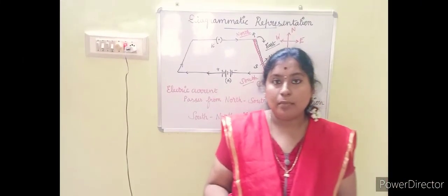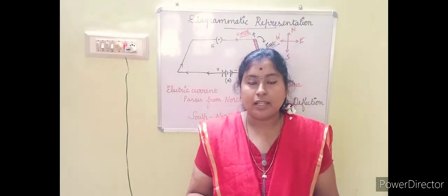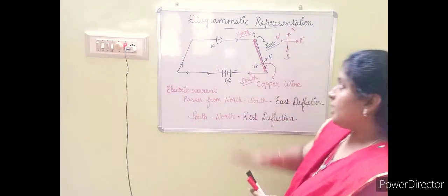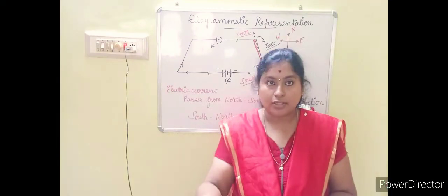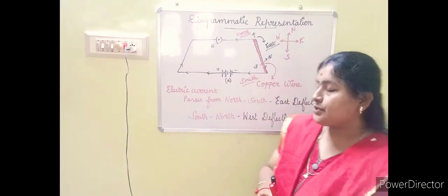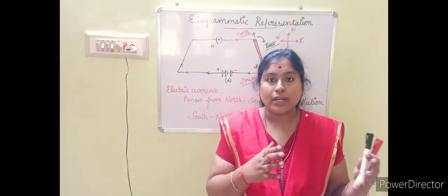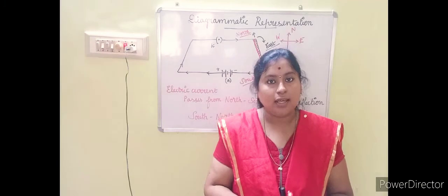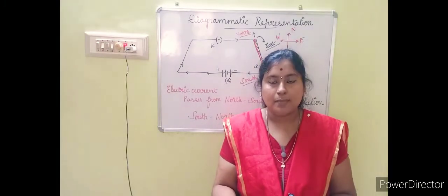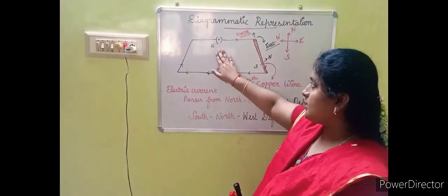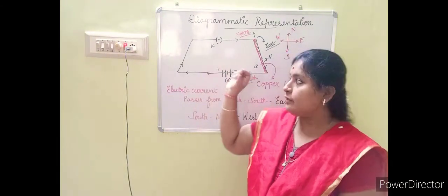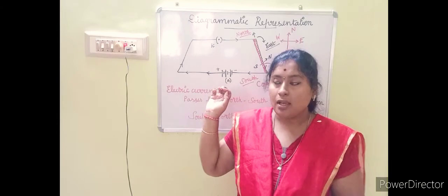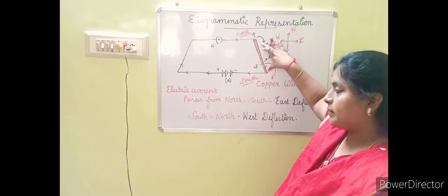Now we are going to learn about the magnetic effect due to electric current with the help of a diagram — a diagrammatic representation of the concept we discussed. We are going to take an electric circuit and connect it with a copper wire. The first component is the key with the plug — only if you insert the plug in this key will the electric current pass through the circuit. Then a copper wire is attached within the circuit.